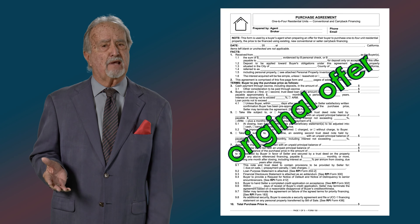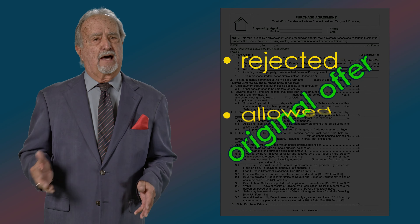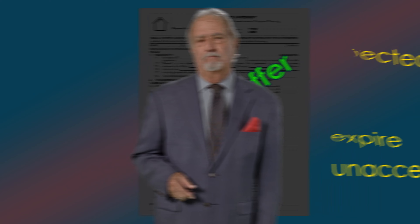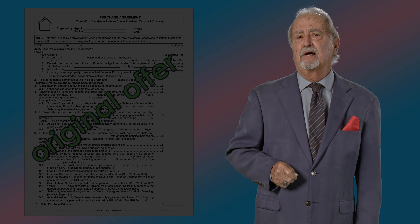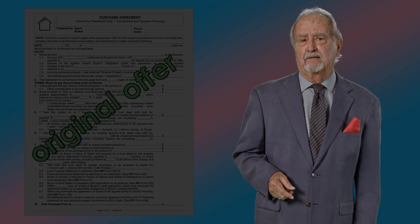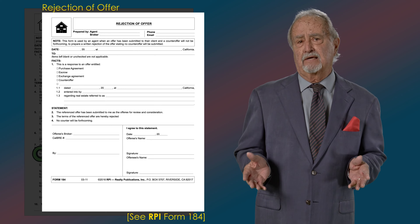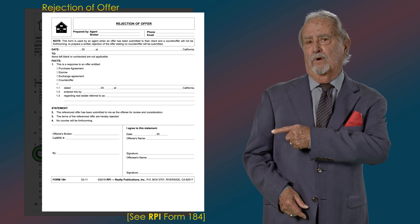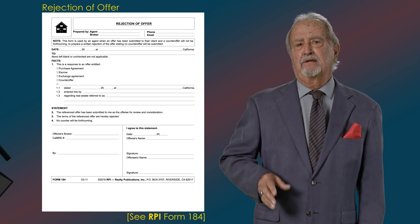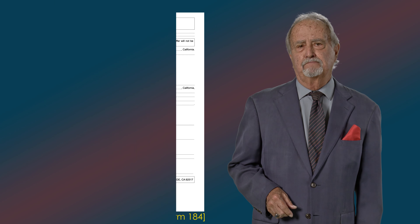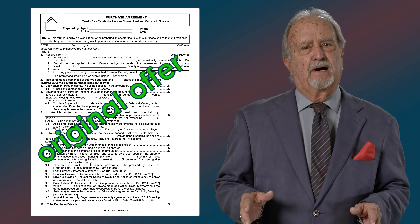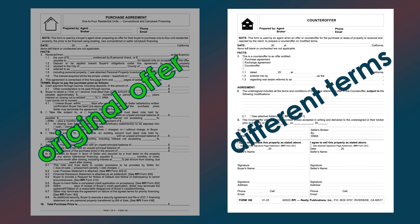A counteroffer may be made when the original offer submitted is not acceptable and is either rejected or allowed to expire unaccepted. A rejection can occur by a written rejection stating no counteroffer is forthcoming — for instance, if the terms of the offer are entirely unacceptable. This is RPI Form 184. A rejection kills the submitted purchase agreement offer. An offer may also be rejected by submitting a counteroffer, which is an alternative set of terms to the original offer. Again, after a rejection has been communicated, the original offer can no longer be accepted to form a binding agreement.